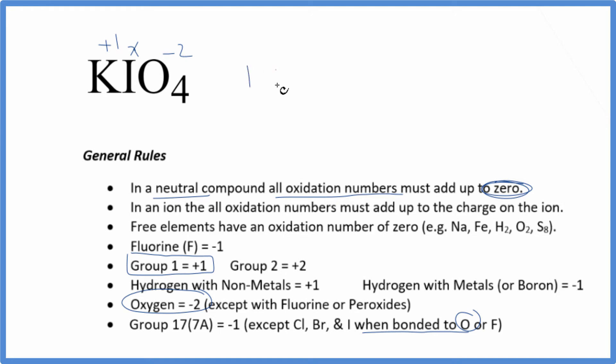We could say 1 plus x plus 4 times minus 2, that's minus 8, that equals zero. x minus 7 equals zero, add 7 to both sides, and we end up with x is a positive 7.